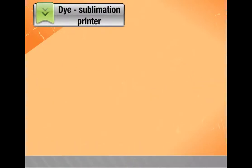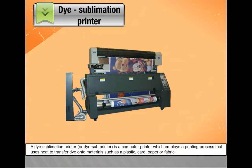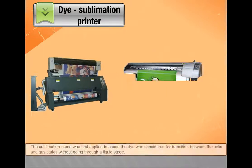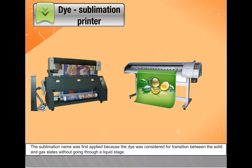A dye sublimation printer, or dye sub printer, is a computer printer that employs a printing process using heat to transfer dye onto materials such as plastic, card, paper, or fabric. The sublimation name was first applied because the dye was considered to transition between the solid and gas states without going through a liquid stage.